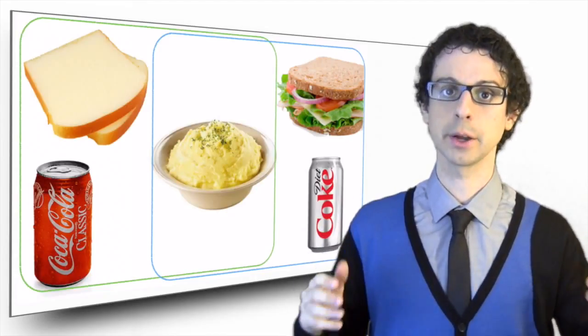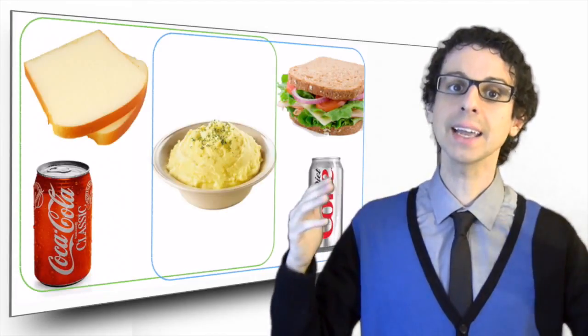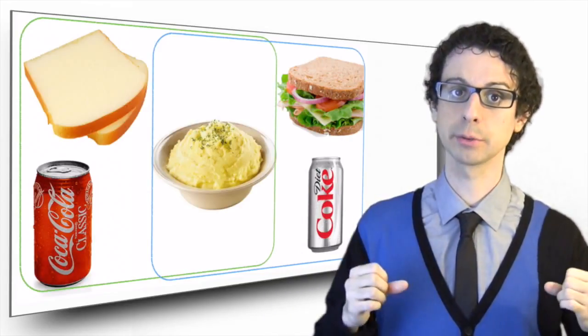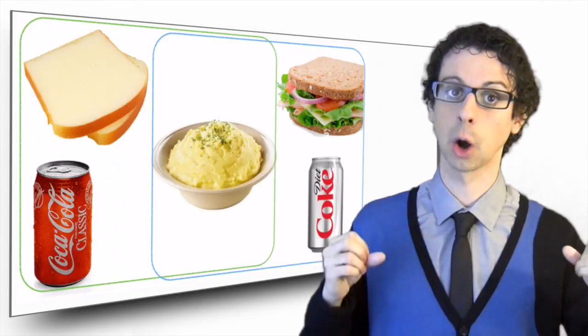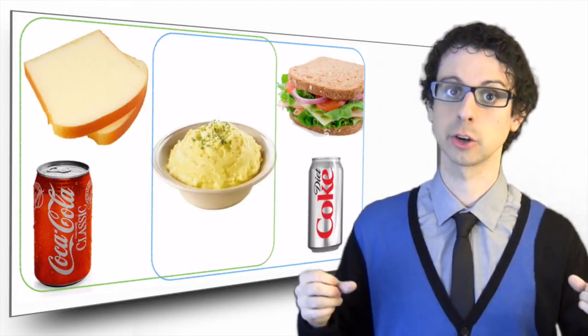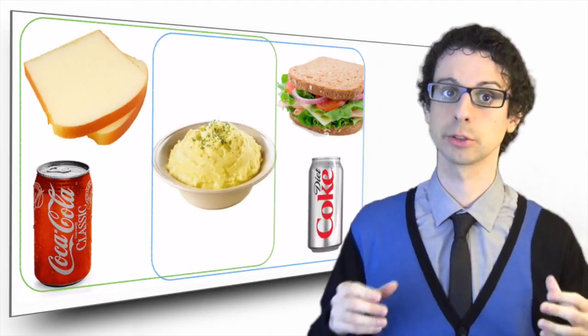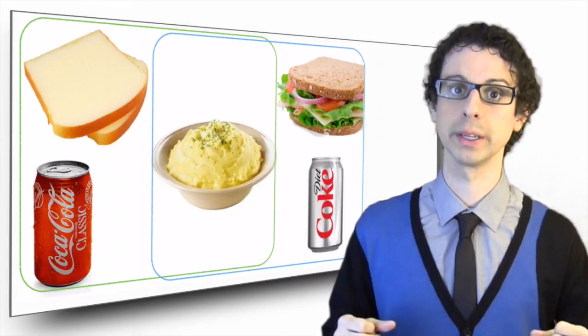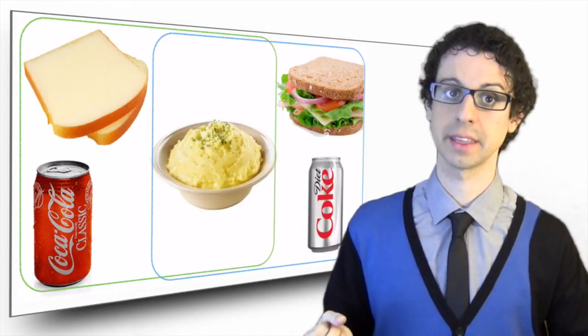In the other scenario, we have compensated the high glycemic index of mashed potatoes with a fiber and protein rich, low glycemic index whole wheat bread, green salad and turkey sandwich and a sugar-free glycemic neutral diet Coke, thus lowering the glycemic load of the whole meal. So our pancreas will say thanks.